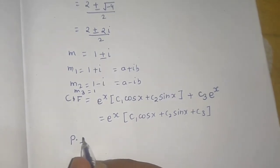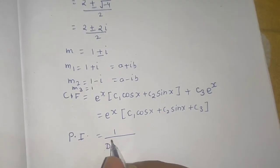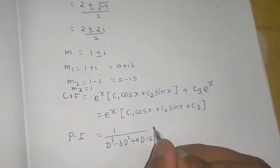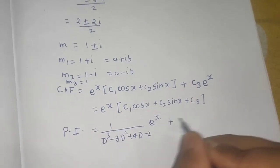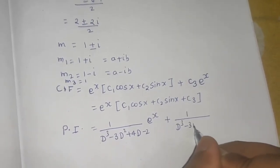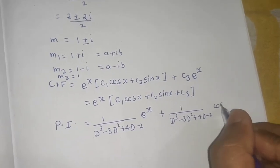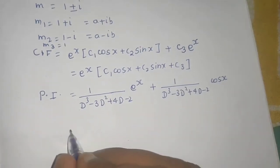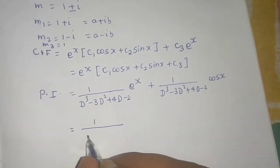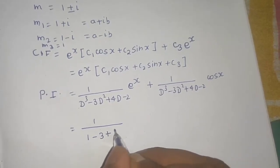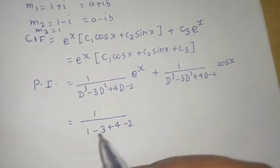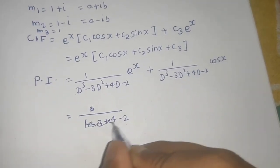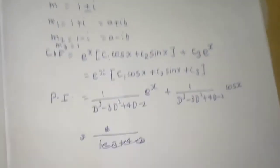For the particular integral, PI = 1/f(D) operating on (e^x + cos x), where f(D) = D³ − 3D² + 4D − 2. For the e^x part, substitute D = 1: 1 − 3 + 4 − 2 = 0. The denominator is 0, so we cannot use the direct rule.